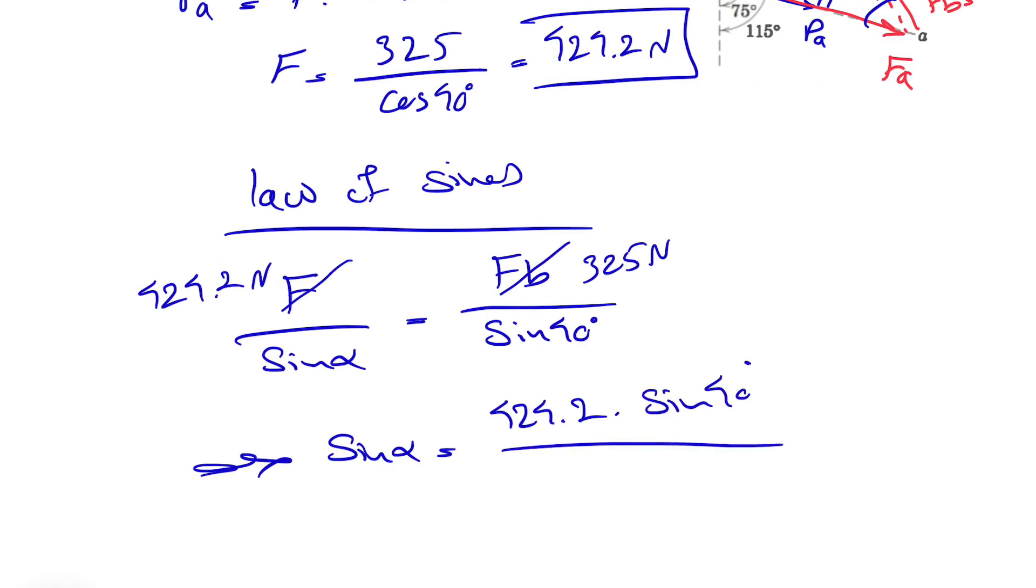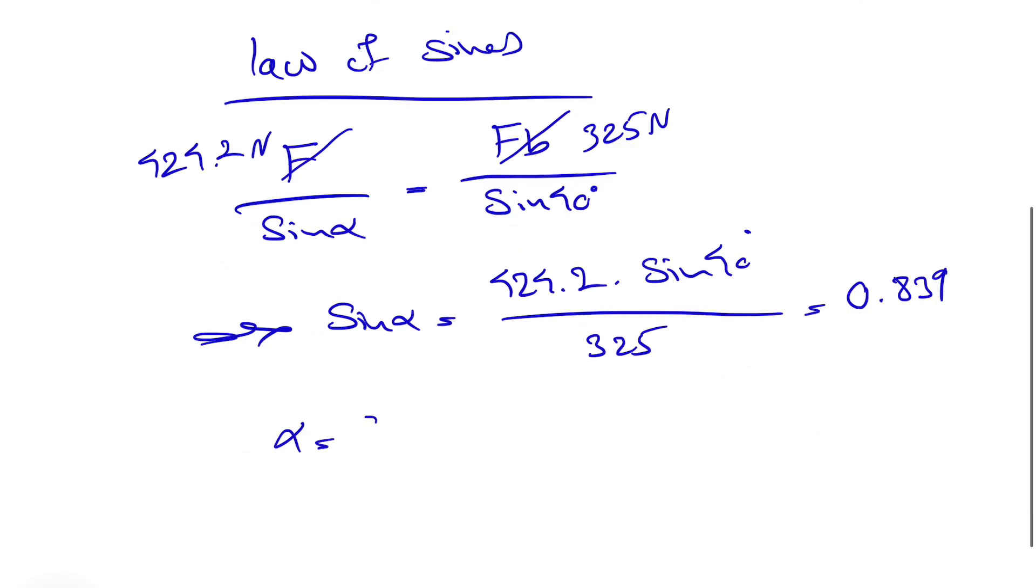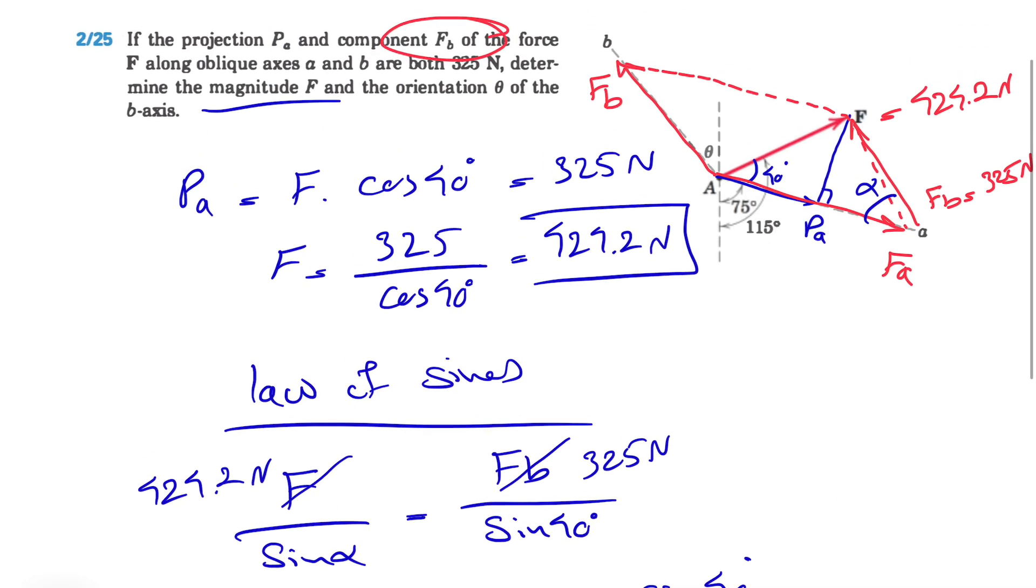This equals 0.839, and alpha would be sin⁻¹(0.839), which is 57 degrees. Now that we have alpha, we know these two angles are the same, and we can find the next angle.